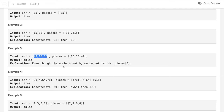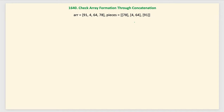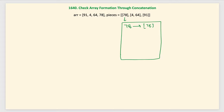Let's look at example 4. Starting from 91, we can find it in the pieces. For solving this problem, we will index the pieces into a hash map or dictionary. The key of the hash map will be the first element (index 0) of each piece array, and the value will be the whole piece array. So 78 maps to [78], 4 maps to [4, 64], and 91 maps to [91].